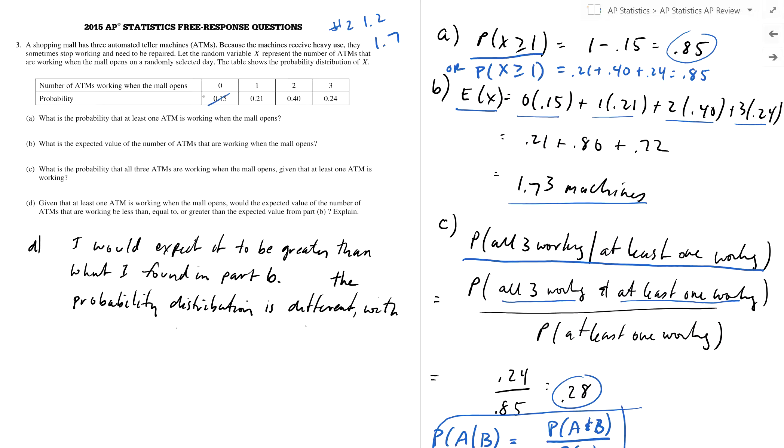So basically what they're saying is, given at least one ATM is working, that means this probability doesn't exist. That 15% or this is zero, I should say. That 15% is going to be dumped into each one of these, spread out somehow in there.